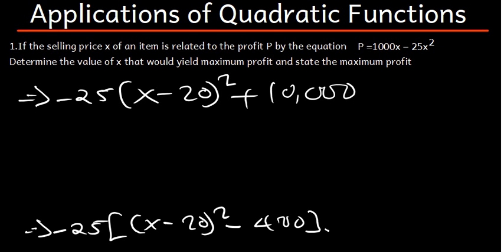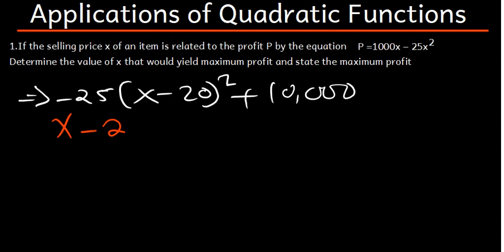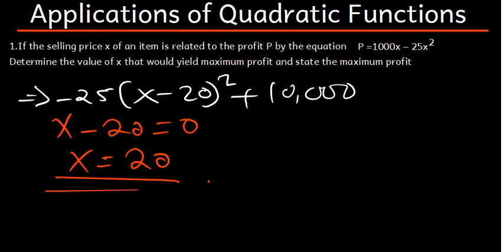To find the value of X, we take the part inside the squared term and set it equal to zero. So X minus 20 equals zero, meaning X equals 20. The question asks us to determine the value of X, and the value of X is 20.